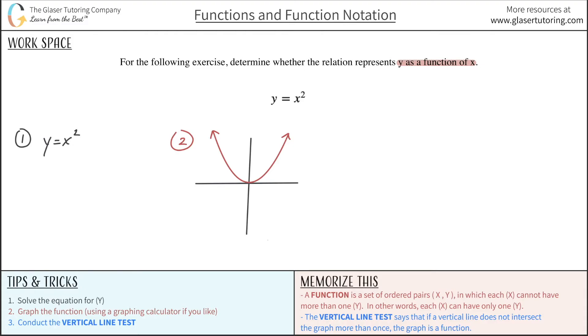So now that we have the graph drawn, the next step will be to conduct the vertical line test. Now, the vertical line test is a test that says that if a vertical line does not intersect the graph more than once, then the graph you drew is indeed a function.